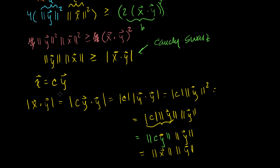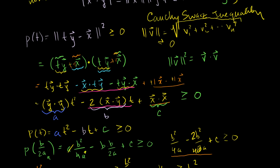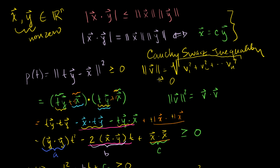It might be a good exercise to prove that the absolute value of c times the length of vector y equals the length of cy. The Cauchy-Schwarz inequality will be used a lot when we prove other results in linear algebra, and in a future video I'll give more intuition about why this makes sense relative to the dot product.